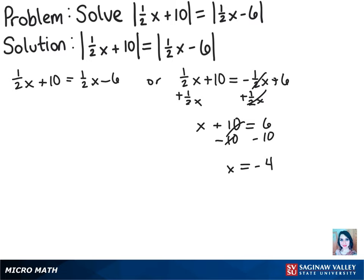Okay, so now let's look at the left side over here. The first thing we're probably going to want to do is subtract 1 half x from both sides, so let's do that. But, as you can see, it cancels out on both sides, so we no longer have an x term to solve for, and we're left with 10 equals negative 6.